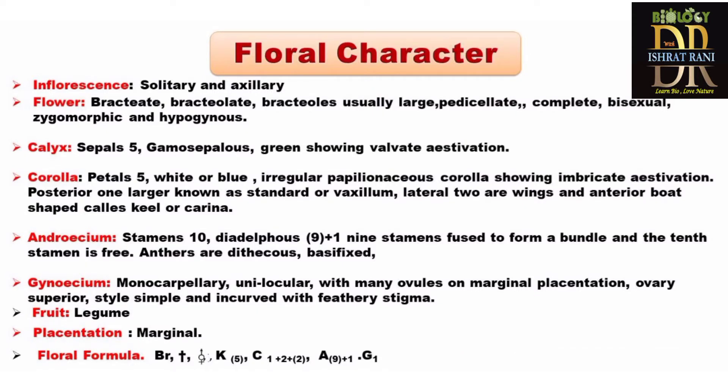The sepals are gamosepalous and green in color. The corolla has 5 petals. The largest is known as the vexillum or standard. The two lateral ones are the wing petals, and the two anterior ones are the boat-shaped keel petals, known as the carina.